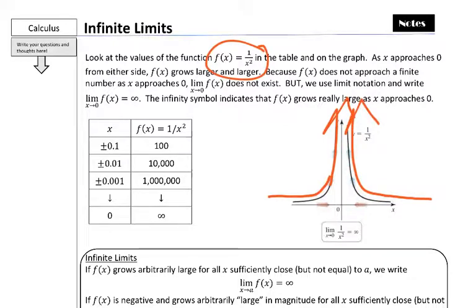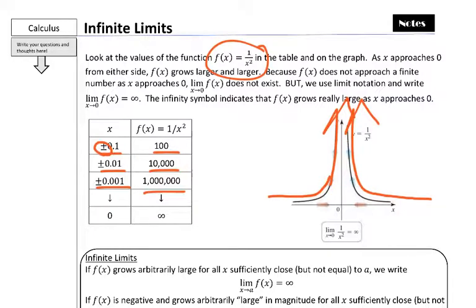You can kind of see that from the table too. Notice this plus-minus — in the previous notes we had from both sides, we're kind of killing two birds with one stone. As you can see, if I get closer and closer to 0, notice these numbers get closer and closer to 0, these y values get very large. And the closer you get, you'll get larger and larger values.